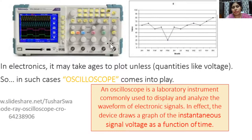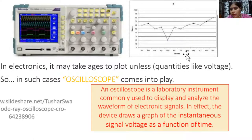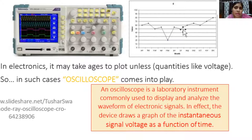Students generally make graphs by taking readings — one reading plotted on the x-axis and another on the y-axis — and a graph is plotted on paper. But if we want to draw real-time signals which are present and propagating in circuits, then what can we do? The solution is the cathode ray oscilloscope.